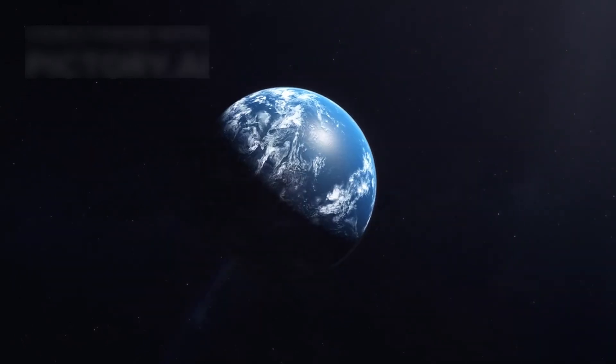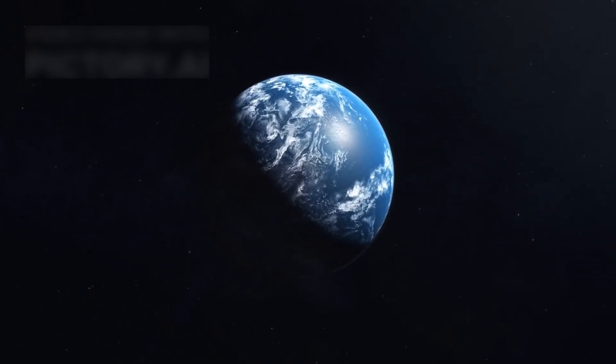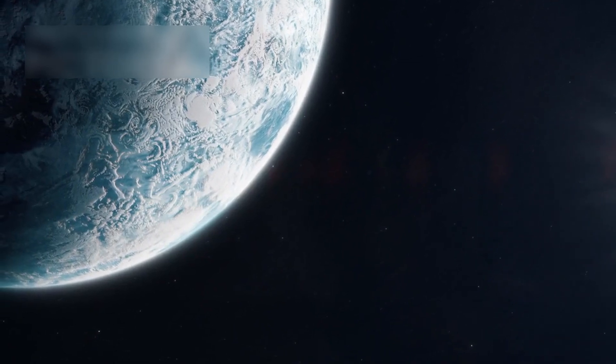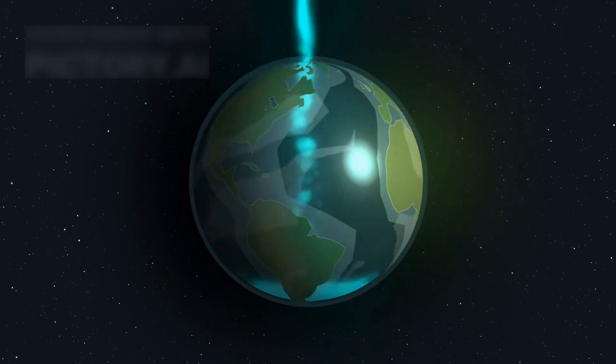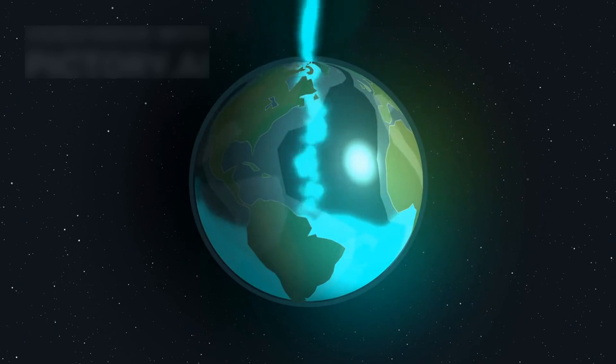These hycean planets could be ten times heavier than Earth, yet covered in deep oceans. Though their temperatures might reach 200 degrees Celsius, the pressure from their atmosphere traps heat effectively. This could let liquid water exist across wider distances than on Earth-like rocky planets.